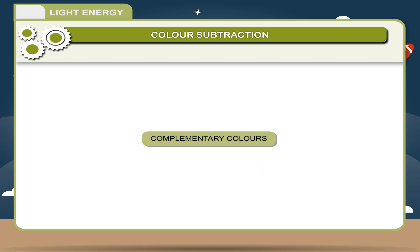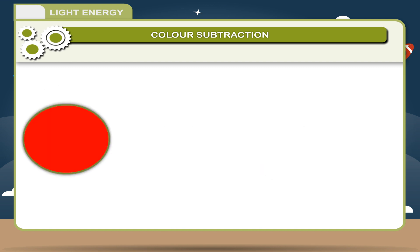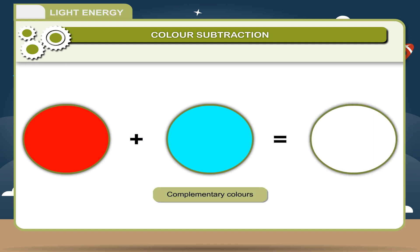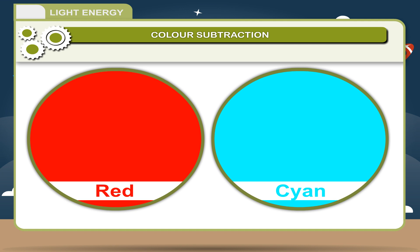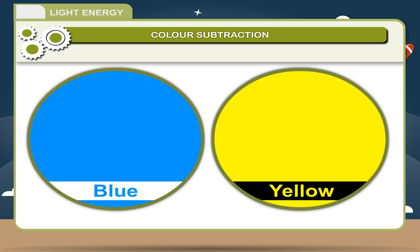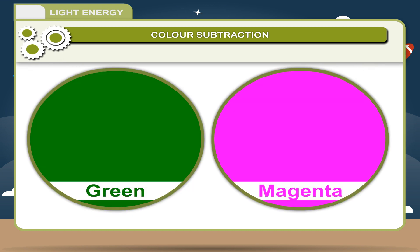Complementary Colors: Any two colors which on combination give rise to white light are called complementary colors. Red and cyan, blue and yellow, and green and magenta are complementary pairs of colors.